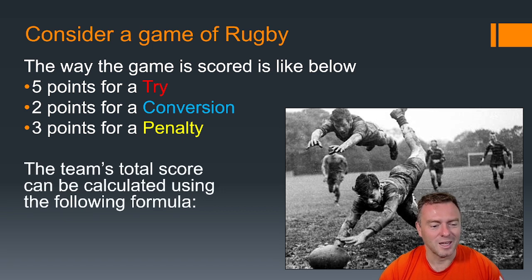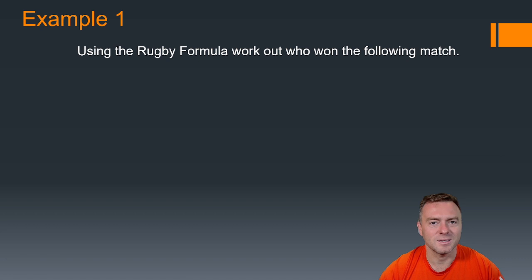The team's total score can be calculated using this formula. The score equals 5 times how many tries (or t), plus 2 times how many conversions (or c), plus 3 lots of penalties (or p). So quick little challenge here using the rugby formula 5t + 2c + 3p. Let's see if we can work out who won this game.